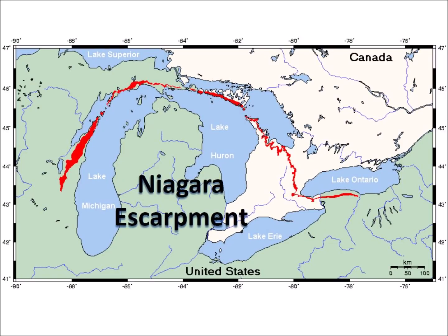The Niagara Escarpment. An escarpment is a long, steep slope, especially one at the edge of a plateau or one that separates areas of land at different heights. An escarpment is basically a steep or vertical cliff, either above or below sea level.